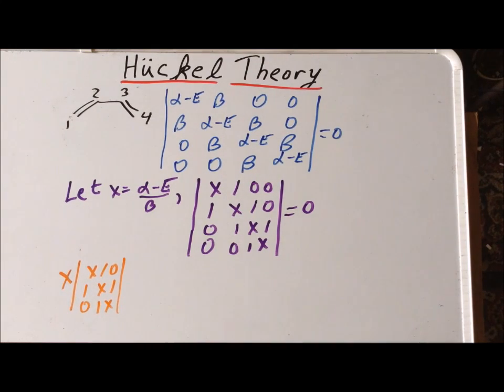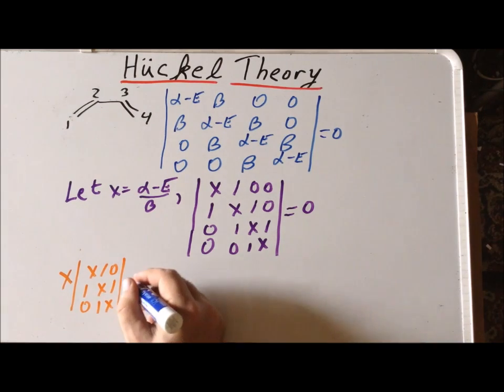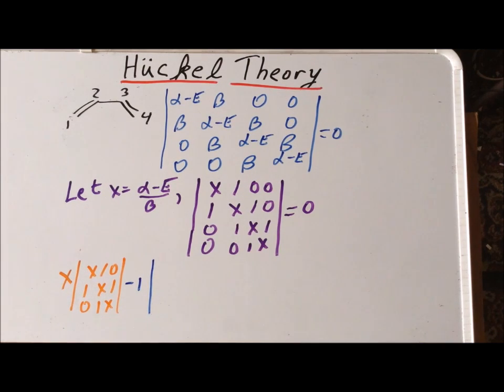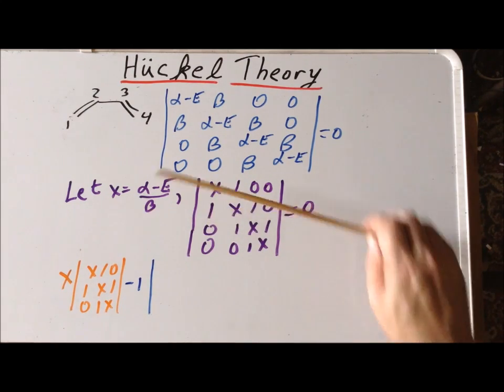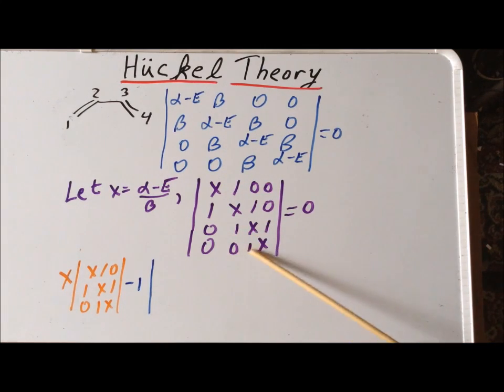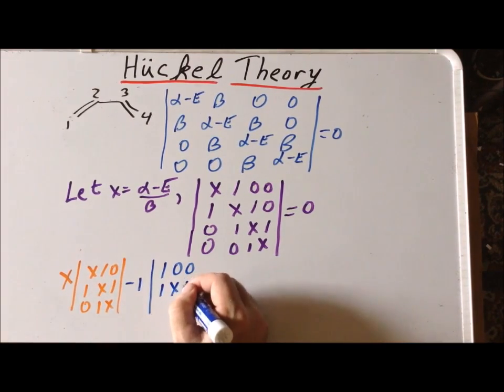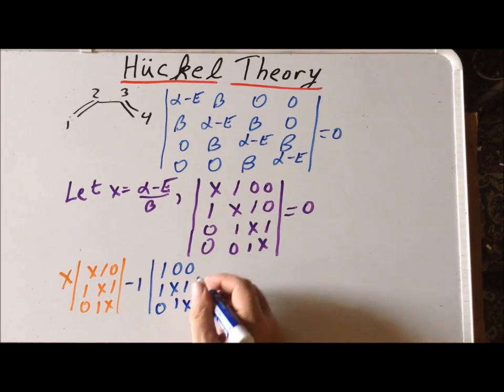The second term we get by using the one as our coefficient. Recall that the coefficients alternate in sign, so we need a minus one. And again, it's going to multiply by a three by three determinant formed by removing the first column and now the second row. So, we have 1, 0, 0; 1, x, 1; 0, 1, x. Equal to 0.